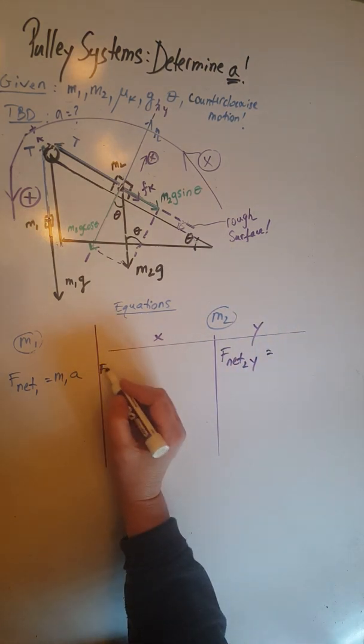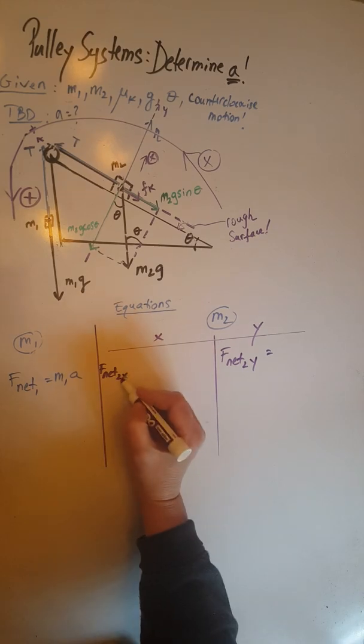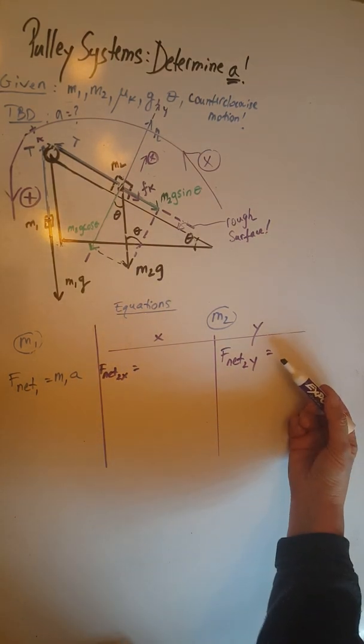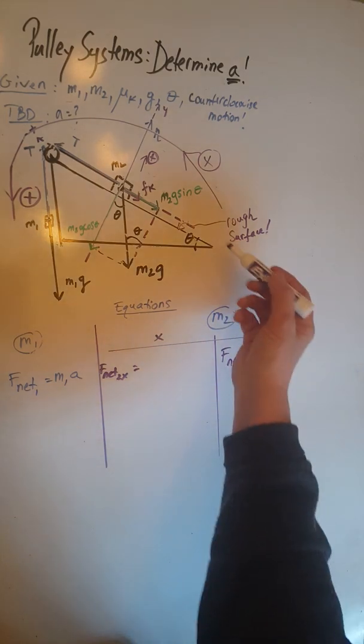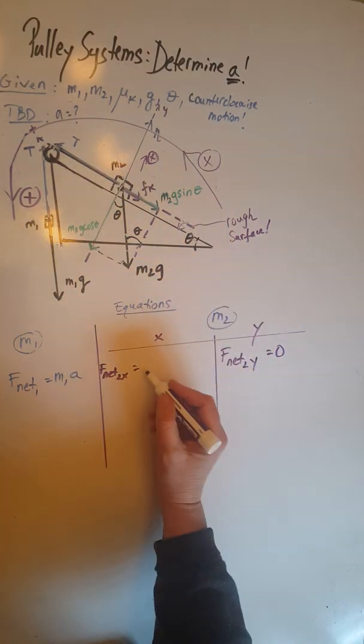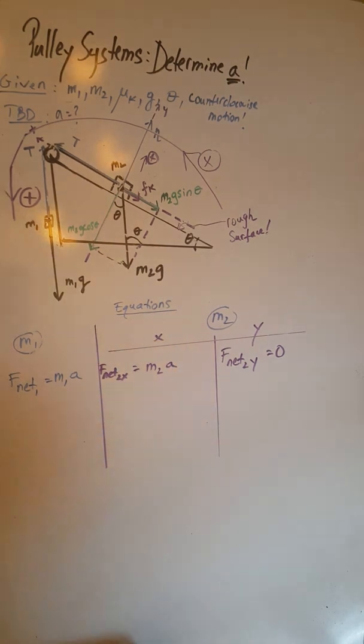F net 2y must be equal to 0, those forces are balanced, while F net 2x is going to give me my m2a, all based on Newton's second law of motion.